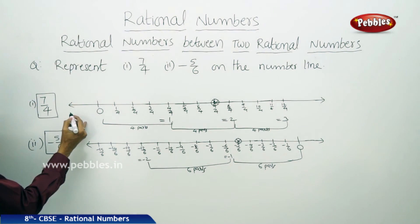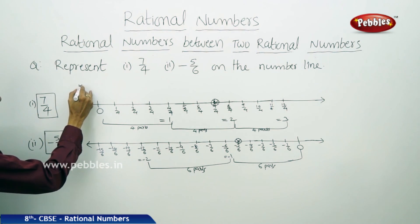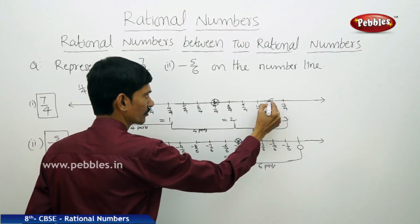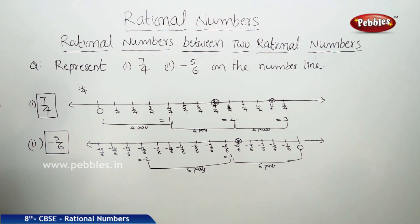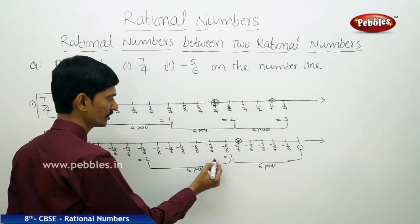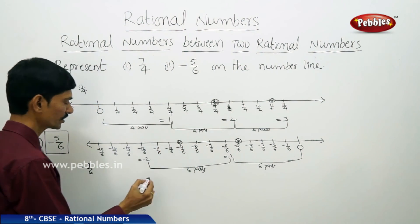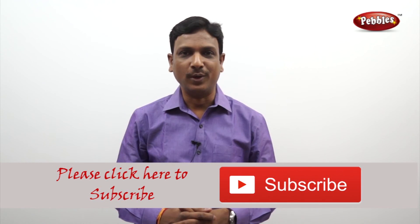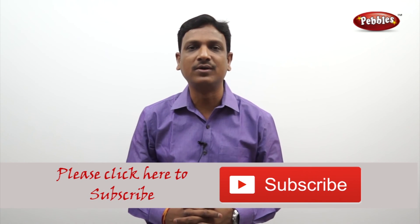If we want to represent another rational number, for example 11 by 4 on the first number line, it is between 2 and 3. And minus 9 by 6 on the second number line is between minus 1 and minus 2. In this way, you can represent any rational number on the number line. If you like this video, please give a thumbs up and subscribe to our channel for more videos on the CBSE syllabus.